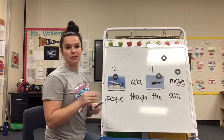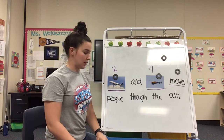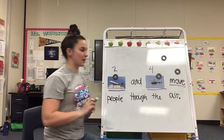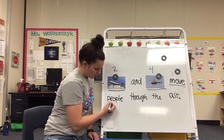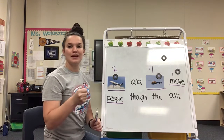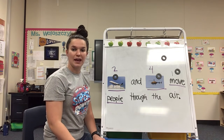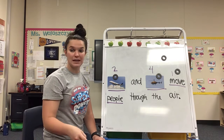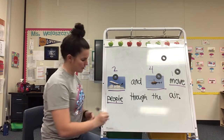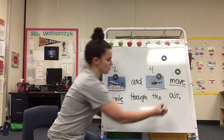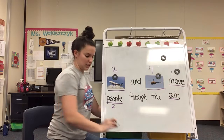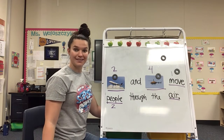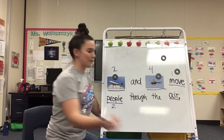Move. Get your rock ready. Move. Ready, go. Move — one syllable. Say 'people.' People. Get your rock ready. Ready, go. How many? People — two syllables. And last word: air. Get your rock ready. Air. Ready, go. How many? Air — one syllable.